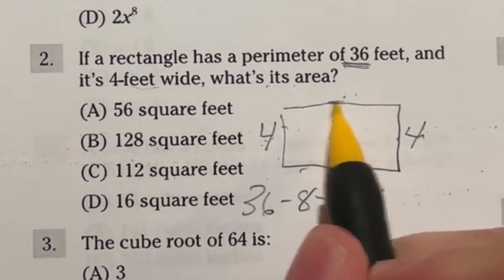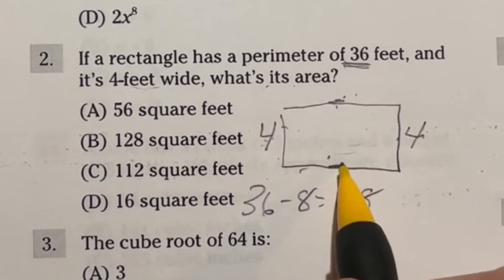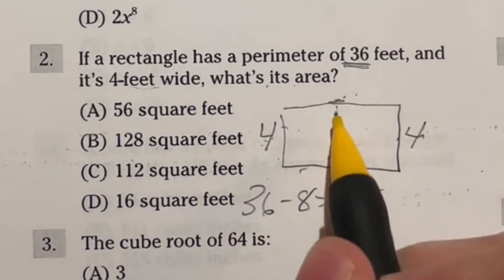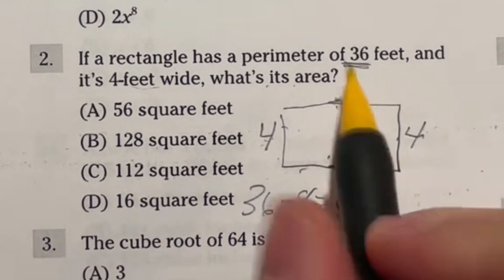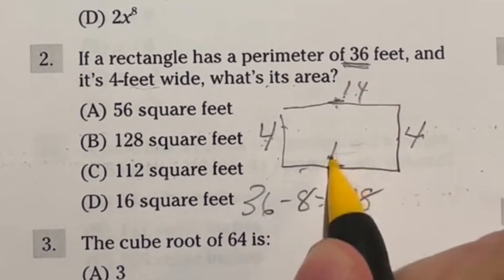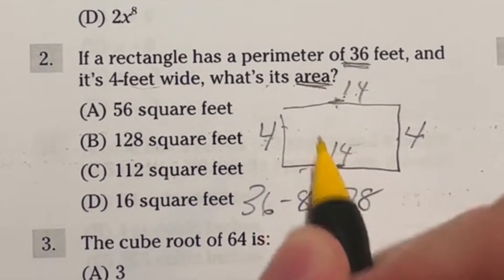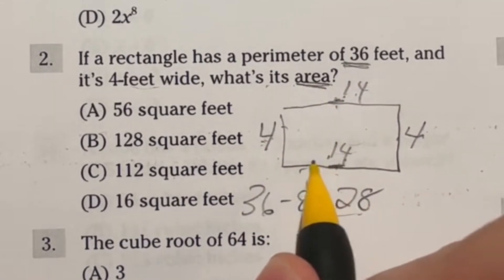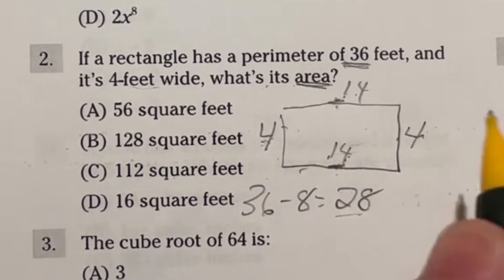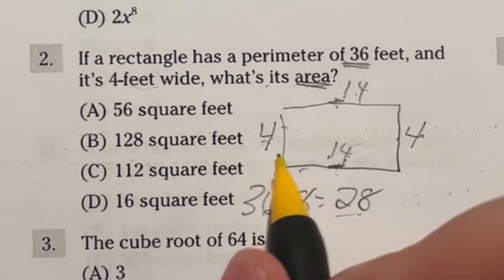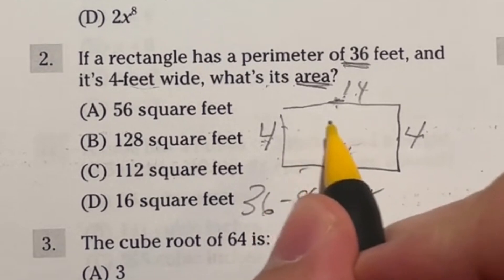Now 28 is going to be this side and this side. So if I split that 28 in half to get the top and bottom here, that's going to give me 14 and 14. So our last step here is to find the area. How do you find area? You do length times width. So now that we know it's four and 14, we have to just multiply those together to get our final answer.